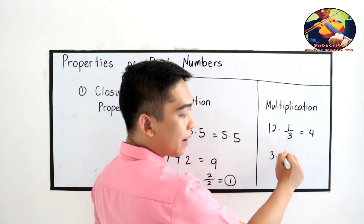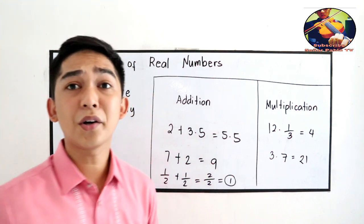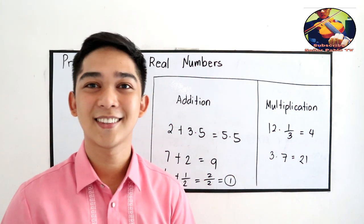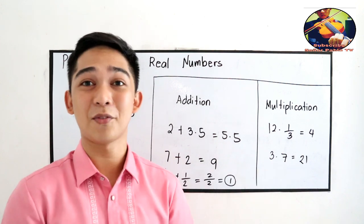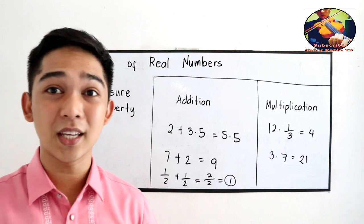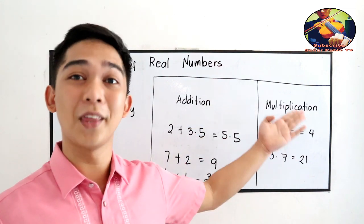Or 3 times 7, that is 21. Or simply, the closure property is just the addition and the multiplication. We're just going to simplify, and that's the closure property of addition or closure property of multiplication.